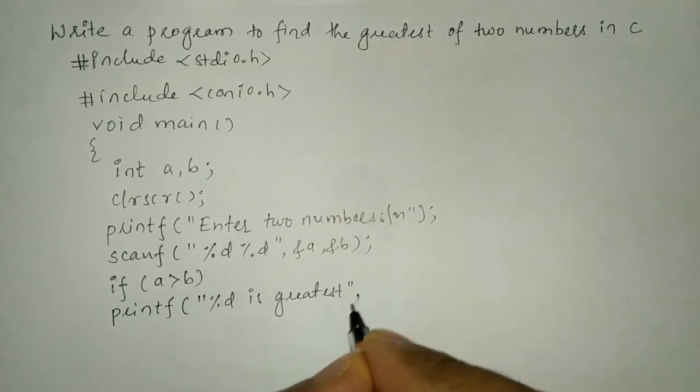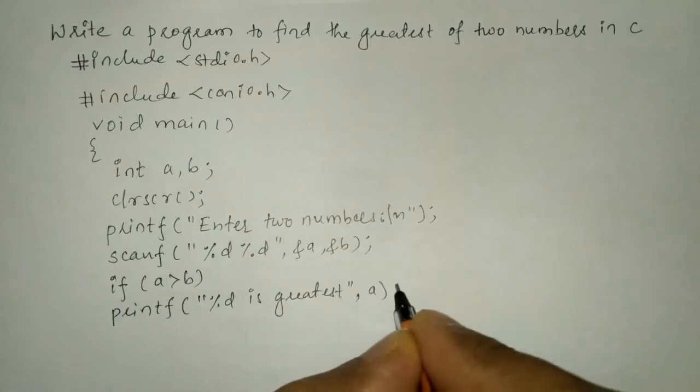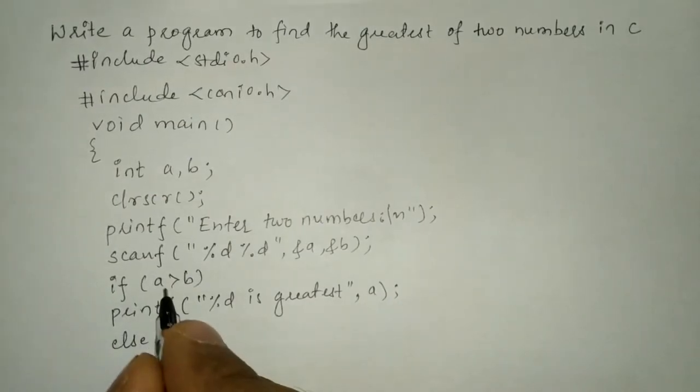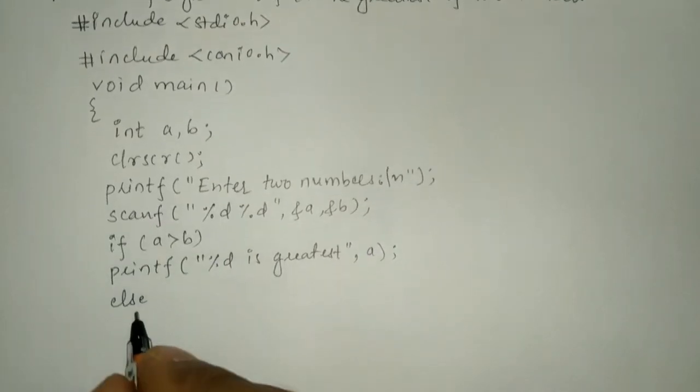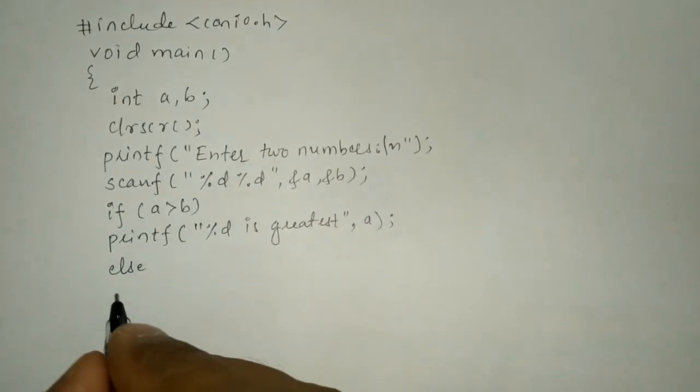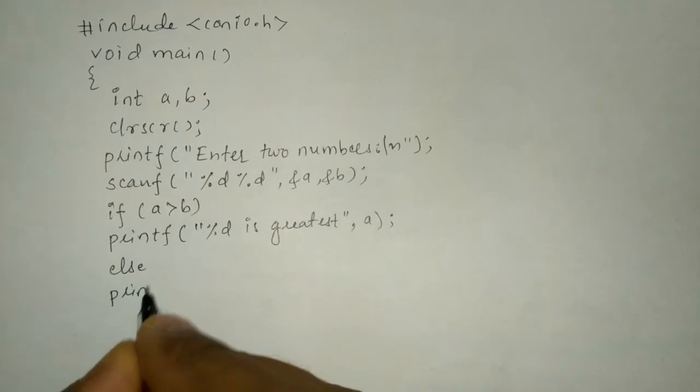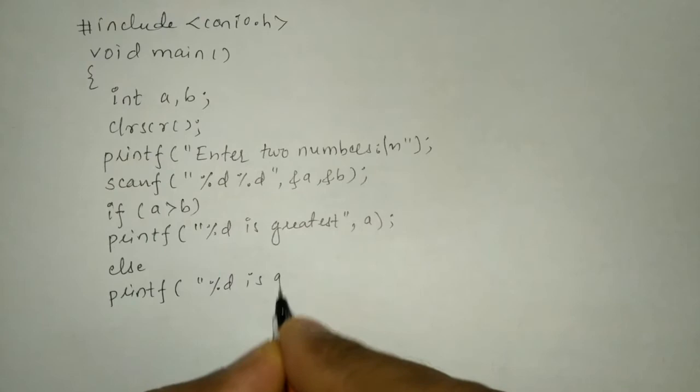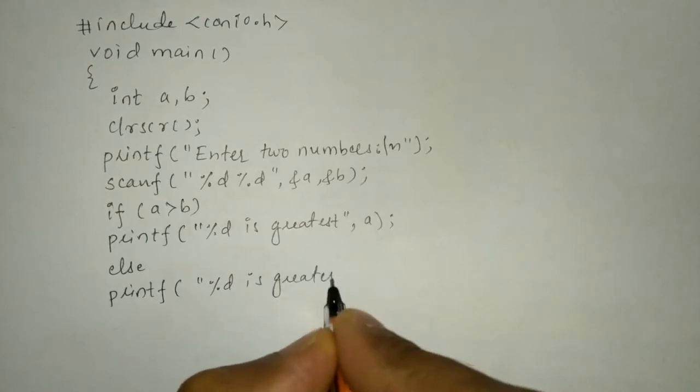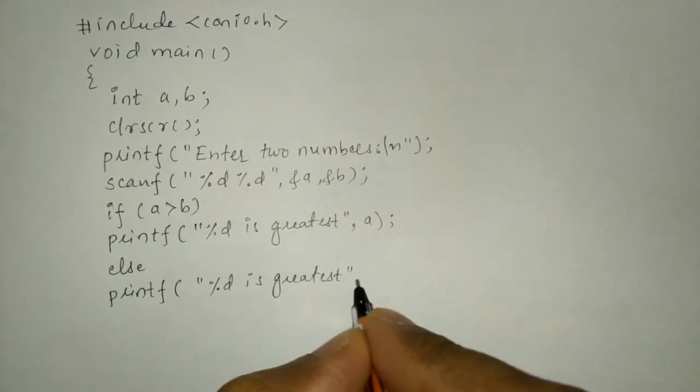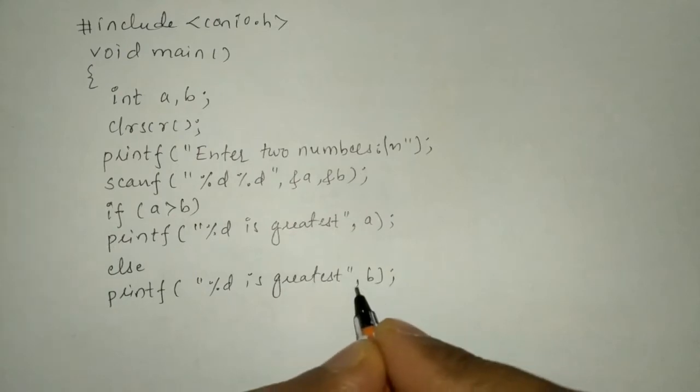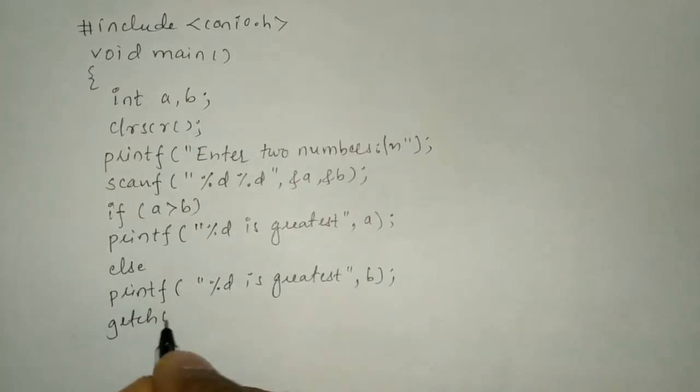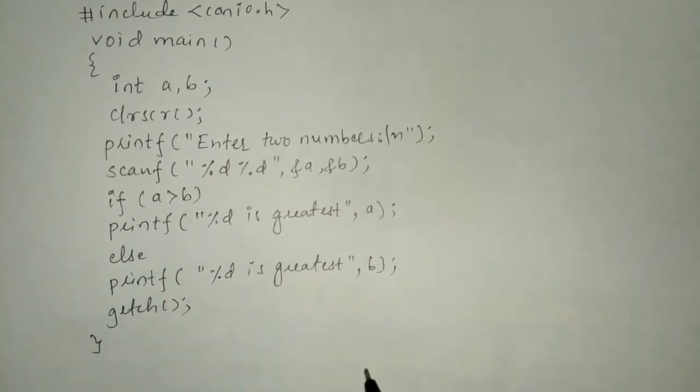End the double quotation mark and put comma a and then put semicolon. Here we will write getch function and curly closing brace.